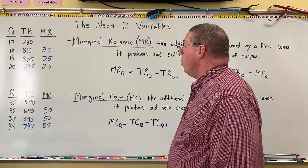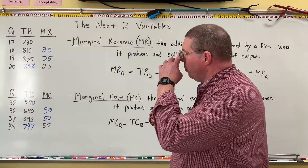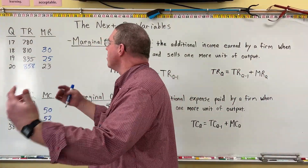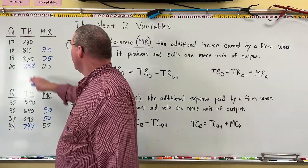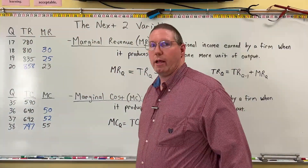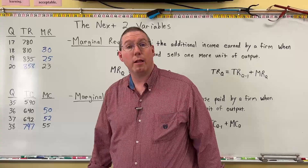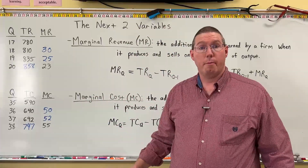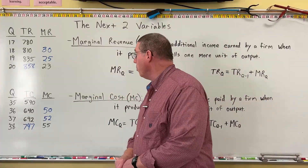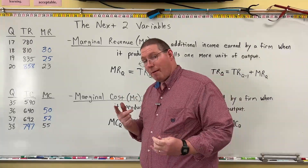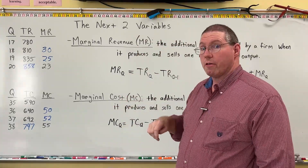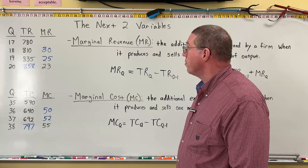This relationship between total cost and marginal cost is the same as the relationship between total revenue and marginal revenue — and also the same as the relationship between total utility and marginal utility. Now I want to point one thing out, and then we're going to go over to the table and fill in marginal revenue and marginal cost, and go down a couple more rows.